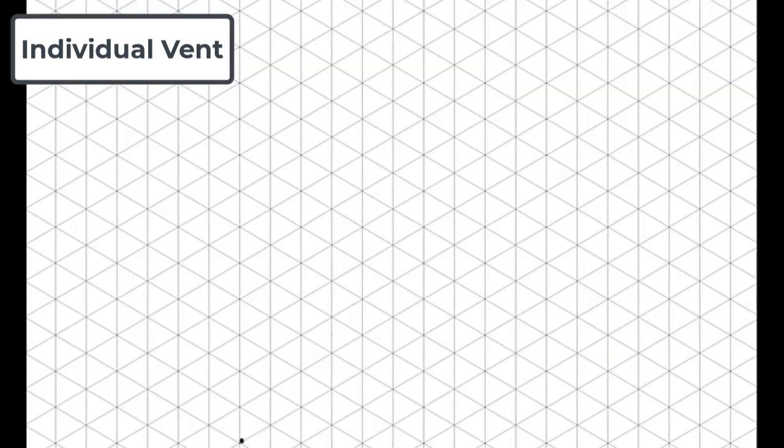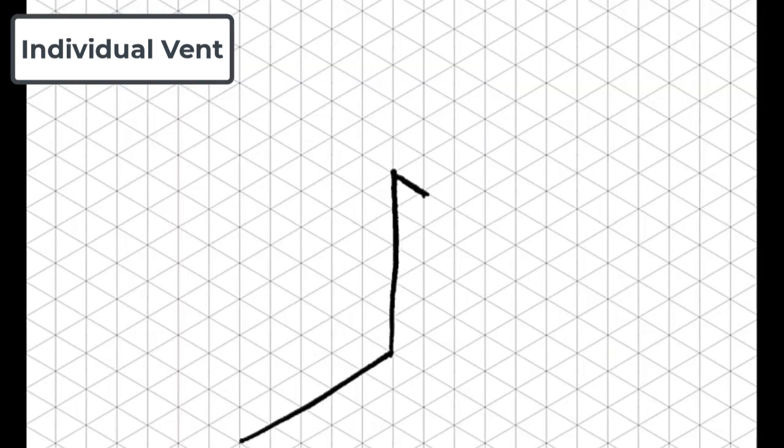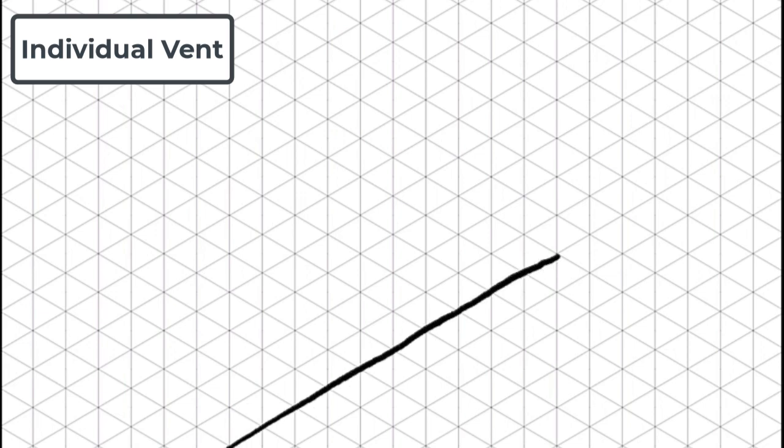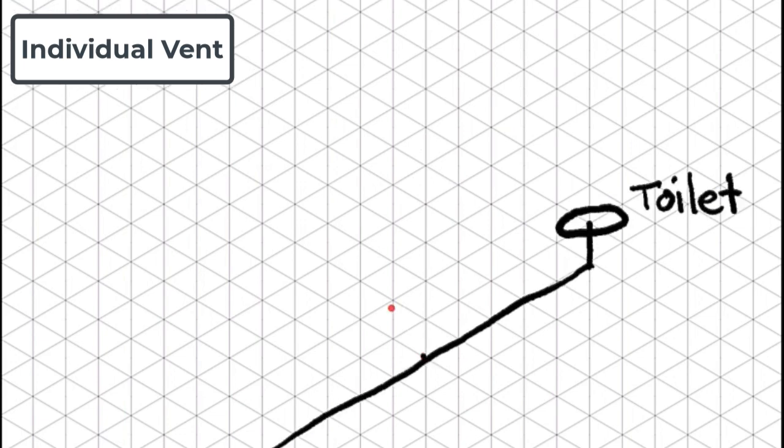Let's have a look at a few specific examples of individual vents. This illustration has a vertical vent coming off of a vertical pipe. And this illustration has a vertical vent coming off of a horizontal pipe at a 45 degree angle and turning vertical.